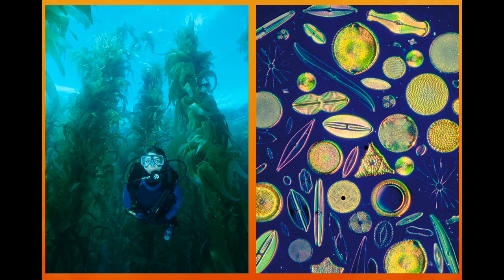These two images give you a sense of how diverse a group algae is. The left-hand image is a picture of giant sea kelp — the diver is for scale. Giant sea kelp can reach lengths as long as 213 feet. Diatoms, on the right, are microscopic and cannot be seen with the naked eye. What is even more impressive is that these examples are not the largest or the smallest representatives of organisms that are considered algae.